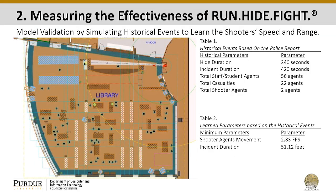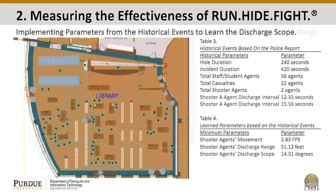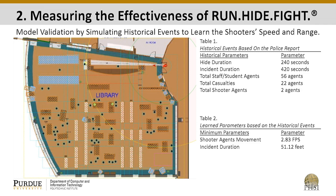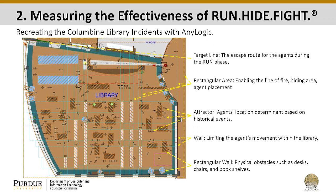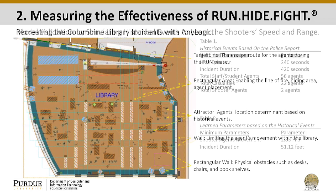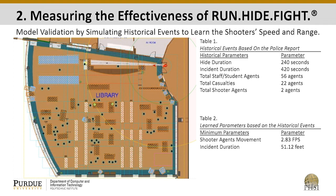This is a model progression based on a historical event. Every single progression that you see is documented in the books and in the report. What we wanted to learn from modeling this event was two things: the first was the shooter agent's speed. There are two shooters, and we wanted to average their speed.